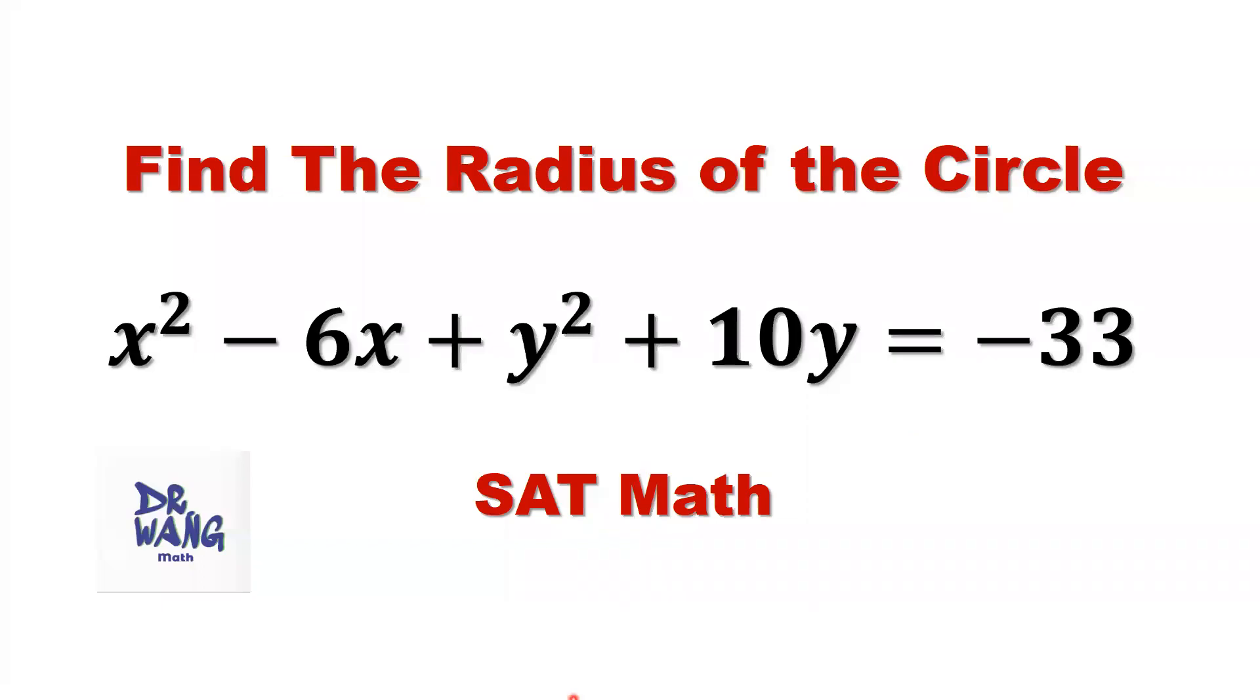Hello everyone, I'm Dr. Wen. Here is the question: Find the radius of the circle x squared minus 6x plus y squared plus 10y equals negative 33.